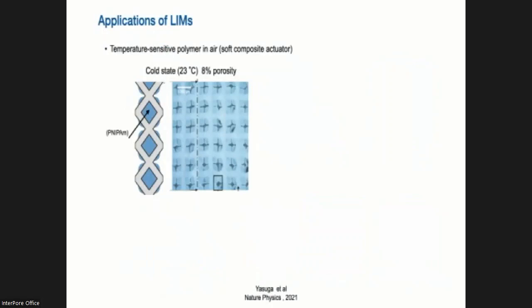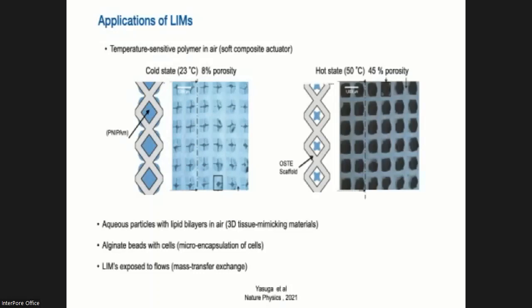So having these LIMs, we can do different things with them. One of the things we can do is soft composites like actuators or tunable filters. You can imagine that you're locked in a temperature sensitive polymer, which in the cold state is quite large. So we have large droplets, and in the warm state or in the hot state, these droplets shrink. So we can basically tune the porosity of these materials by changing the temperature.